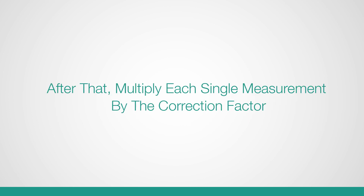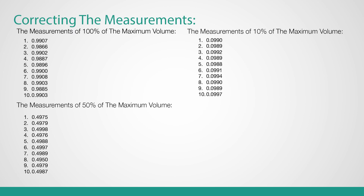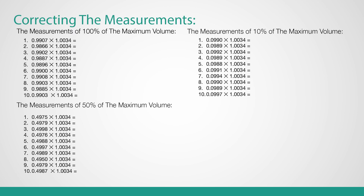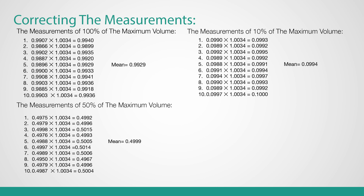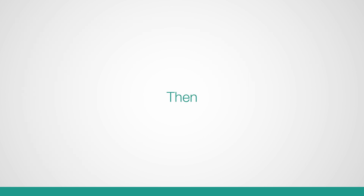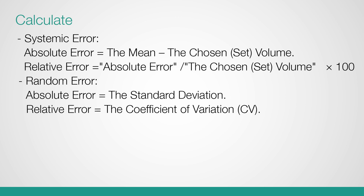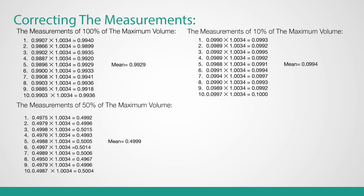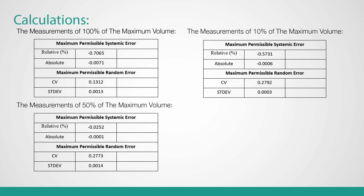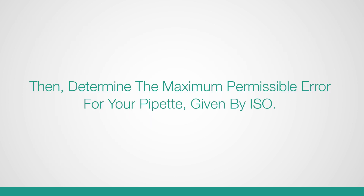Multiply each single measurement by the Z-factor to correct your measurements. These are our measurements — multiply by the Z-factor. Then calculate the systematic and random errors using the corrected measurements. These are our results and the calculations for each volume. Obtain the maximum permissible error from the ISO 8655 protocol.